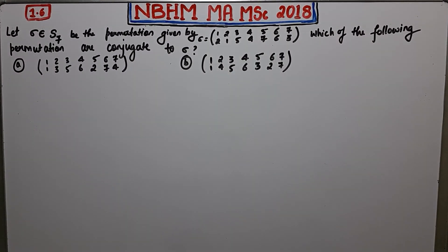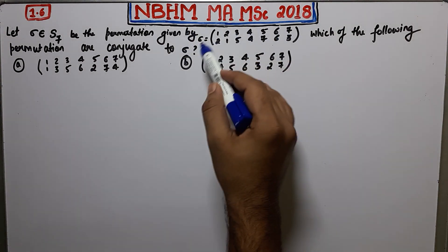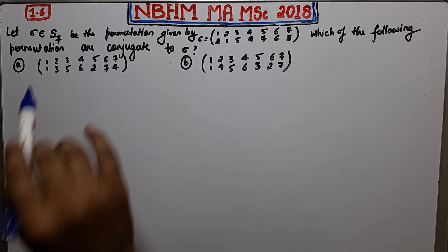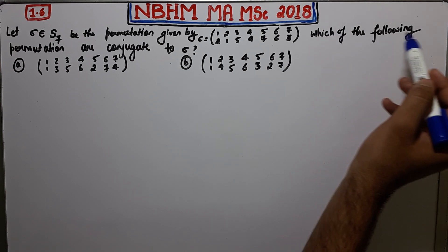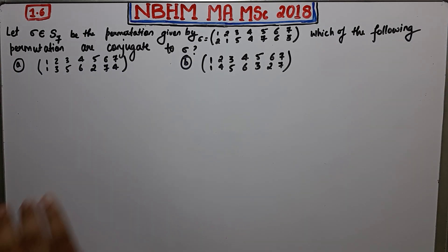Welcome. This is question number 1.6 of NBHM MAMSE 2018. Let sigma belong to S7 be a given permutation. S7 is the symmetric group on seven symbols. We need to determine which of the following permutations are conjugate to sigma.